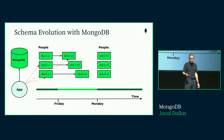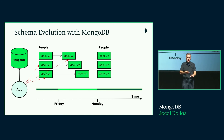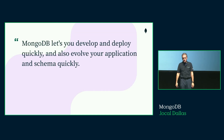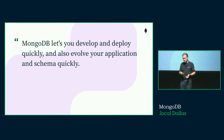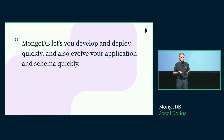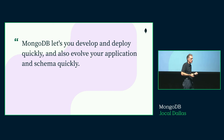We can take all the time we want to do a full migration, or migrate only the documents we want. Once we migrate everything, we can remove the code that handled version one. This gives us a lot more flexibility — we are in control of this potentially ugly modification, and there is no downtime. MongoDB not only lets you develop and deploy very quickly, but also evolve your application and schema quickly. Applications are used 24 hours a day, all over the world, and you need this functionality.